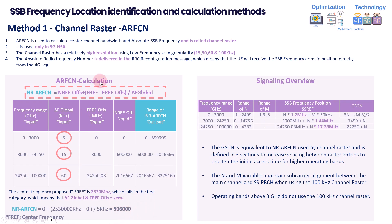If you would like to use the NRFCN method, it can seem complicated, but we will go through an Excel tool which is available for planning purposes. There are also different tools and links available online — some are mentioned in the video description. For GSCN calculation, there are three different formulas because each frequency range has a different formula. You will also see something called the N factor and M factor used in these formulas.